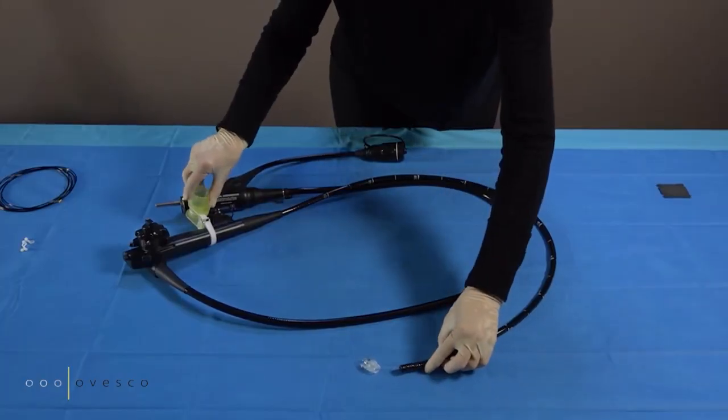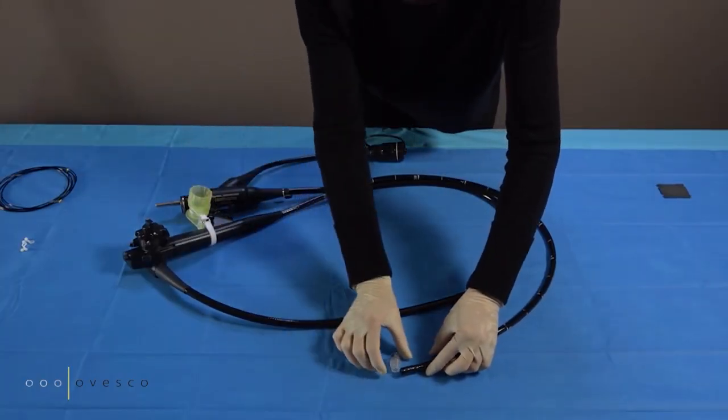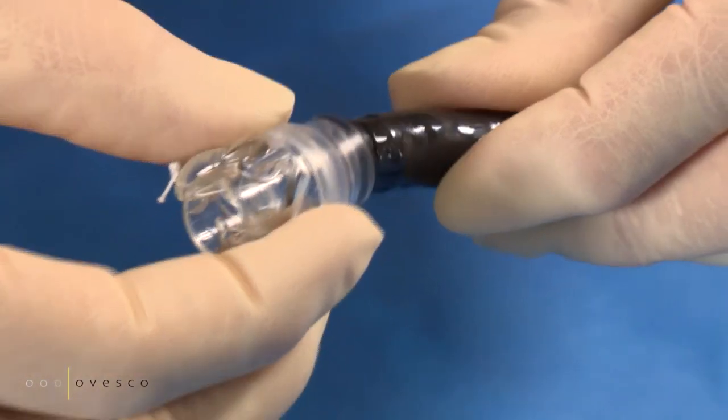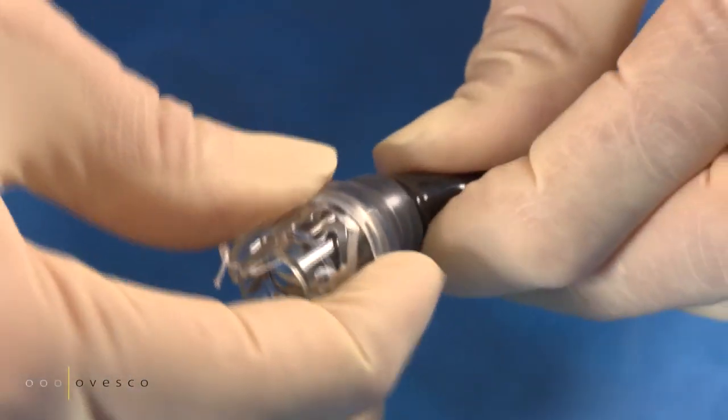Place the cap onto the endoscope. Push the endoscope forward until it reaches the marking.